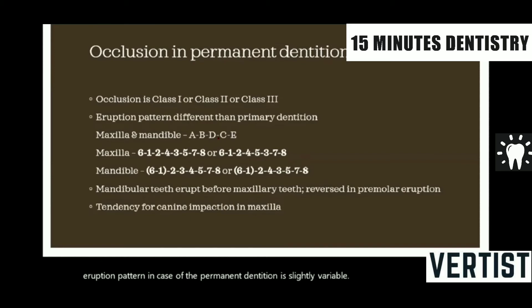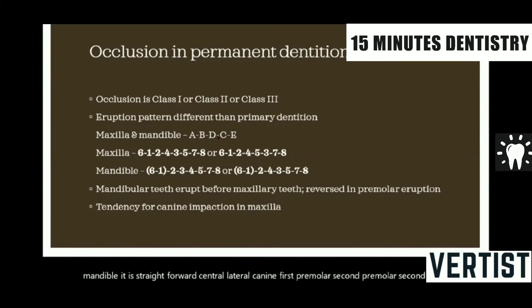In case of the mandible, it is straightforward: central, lateral, canine, first premolar, second premolar, second molar, third molar. But in case of the maxilla, it is slightly altered — the canine usually erupts after the first premolar in almost 70% of cases. In a few cases, it erupts even after the second premolar.